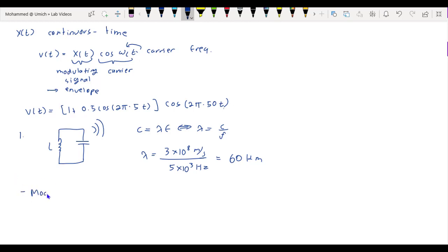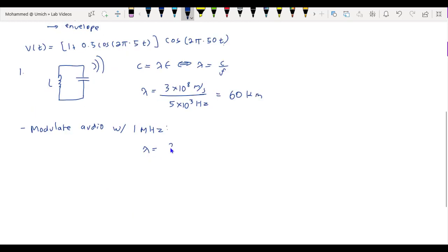Now, if we modulate our audio signal with a high frequency carrier of, say, one megahertz, then this gives us lambda equals 3×10^8 meters per second over 1×10^6 hertz.